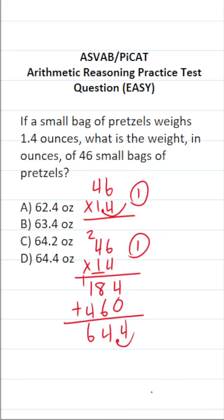Bring in our 1 decimal. We can see that those 46, 1.4 ounce bags of pretzels weigh 64.4 ounces, so this one is going to be D.